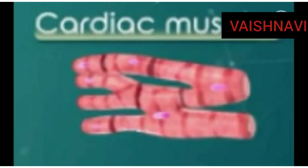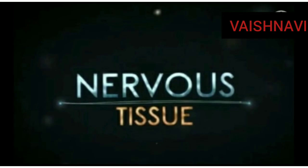Third one is cardiac muscles. Cardiac muscles are involuntary in nature. The cells are long, branched, and have a nucleus. These muscles are present in the heart. This is the information about muscular tissue.